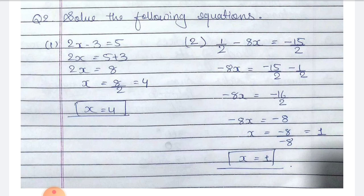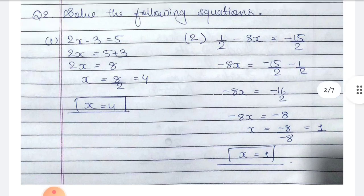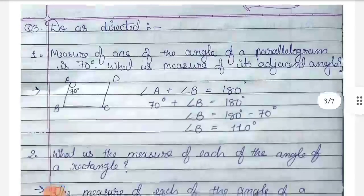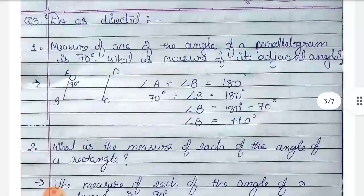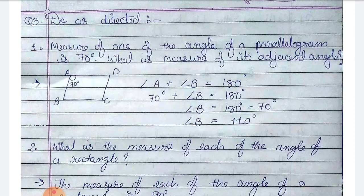Question number 3: do as directed. Number 1 — the measure of one of the angles of a parallelogram is 70 degrees. What is the measure of its adjacent angle?